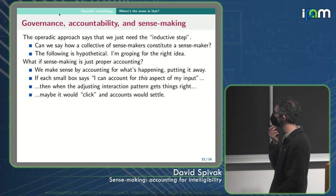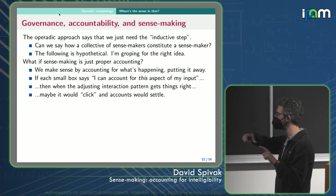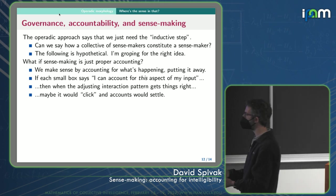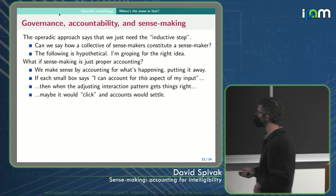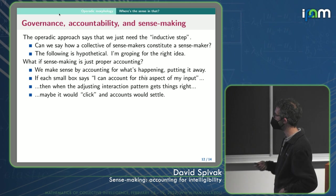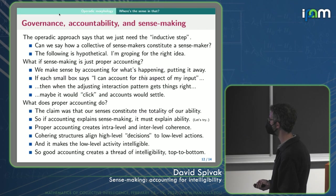And so the following is hypothetical. I'm groping for the right idea here, but what if sense making is just proper accounting? So what if we make sense by accounting for what's happening, we somehow put it away. So if each small box says, I can account for this aspect of my input, then when the adjusting interaction pattern gets things right, then I say, well, that's because Bob spilled his breakfast this morning. And you say, oh, okay, now it all makes sense. And it clicks into place because we had the right interaction. The things I know how to account for and the things you know how to account for kind of click and the accounts would settle.